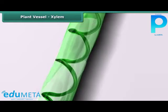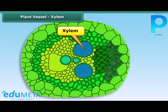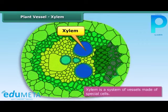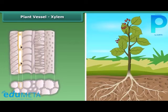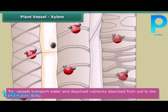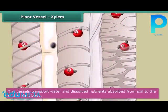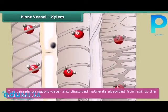A network of tube-like vessels runs through the entire body of a plant. This system of vessels is known as xylem. These vessels are made of special cells and act as channels that connect the roots to the leaves through the stem and branches. Xylem transports water and dissolved nutrients absorbed from the soil to the different parts of the plant through this network of vessels.